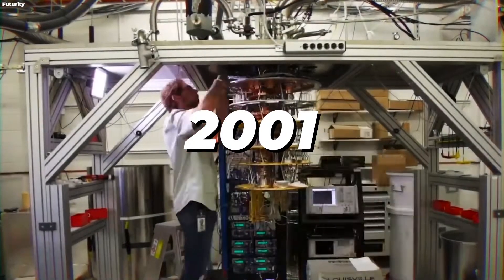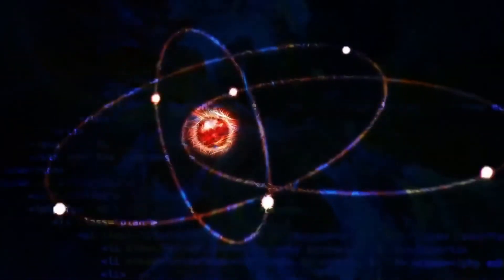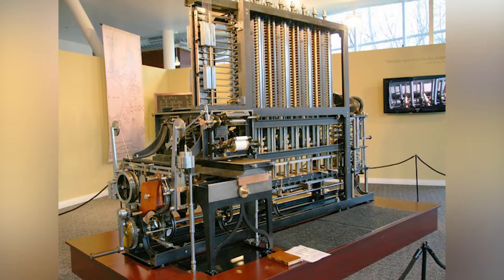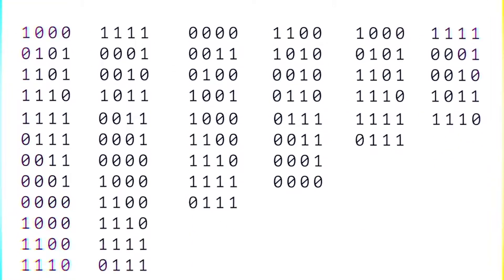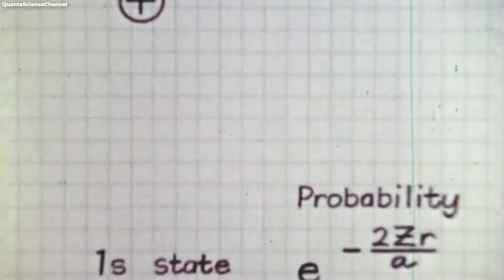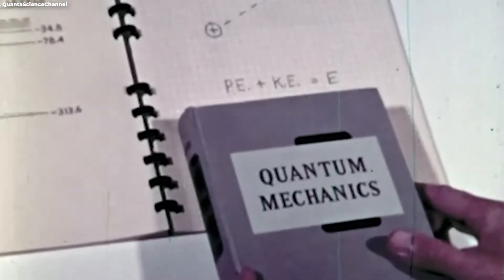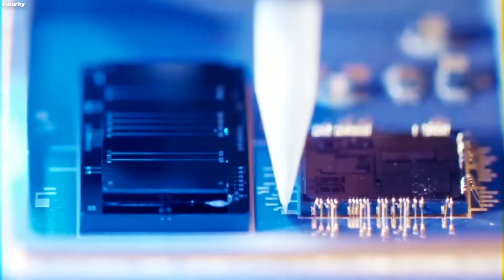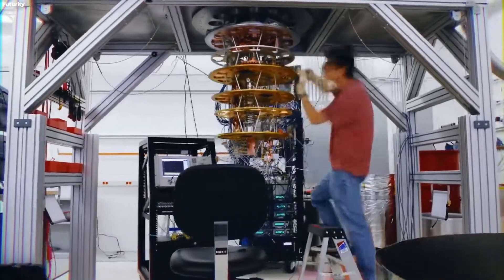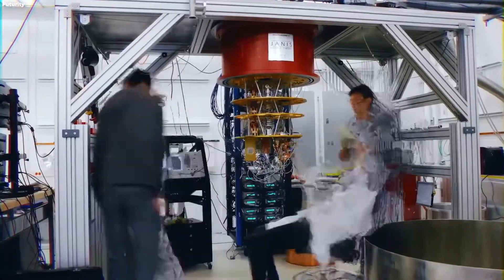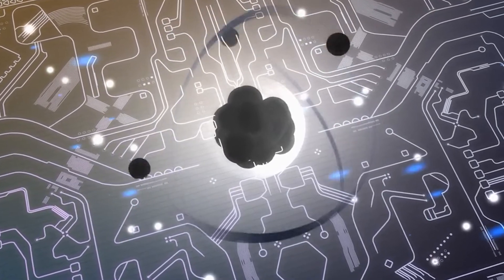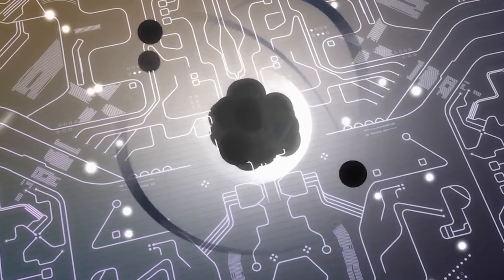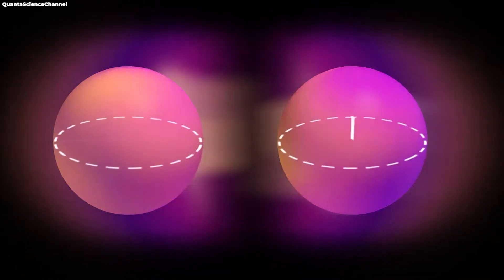In 2001, a team at IBM made a significant breakthrough by demonstrating quantum computing using nuclear magnetic resonance to control qubits. This achievement proved that quantum computation was not just theoretical but could be practically realized. Over time, scientists continued to make strides in developing more reliable qubit systems, experimenting with different types such as superconducting circuits and trapped ions, each with its unique advantages and challenges.